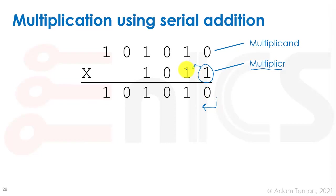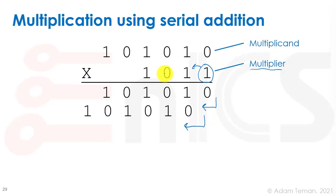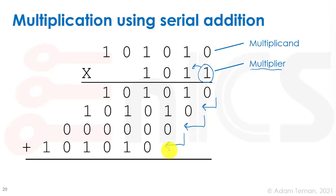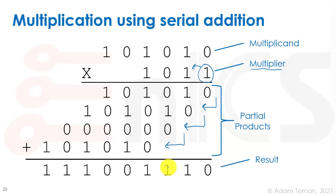Again, since the bit is 1, it copies the entire multiplicand, giving 1 0 1 0 1 0 shifted left by one position. We shift again, and this time we have a 0 in the multiplier, so the AND zeros everything out, giving a line of zeros. The final shift again copies the multiplicand. Now we have our partial product array and we sum them up column by column to get our final result.